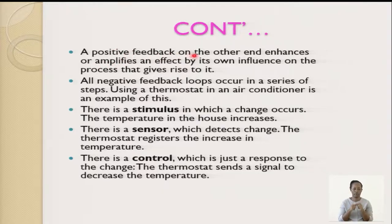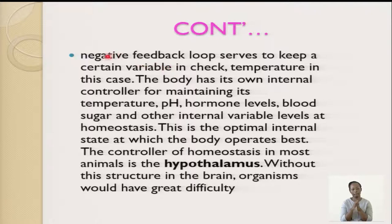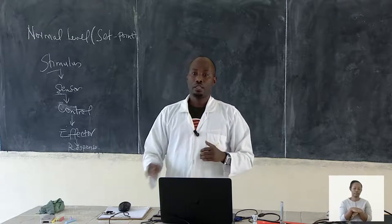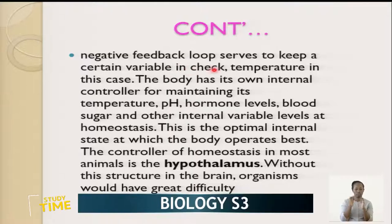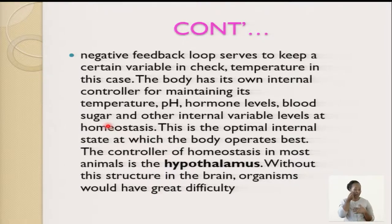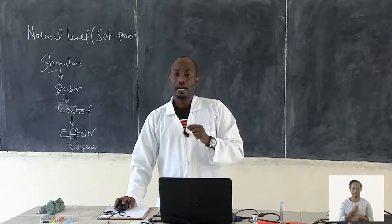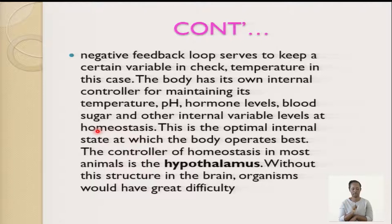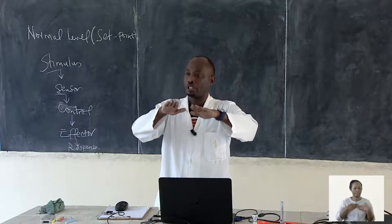We talked about positive feedback, which enhances and amplifies a process. Negative feedback loops serve to keep certain variables in check — for example, temperature, pH, hormone levels, and blood sugar. All these things have to be maintained internally at a constant level. These internal variables are kept at homeostasis — the optimum internal state at which the body operates best. If these things are not kept constant, it will affect the body's metabolism and body activities.